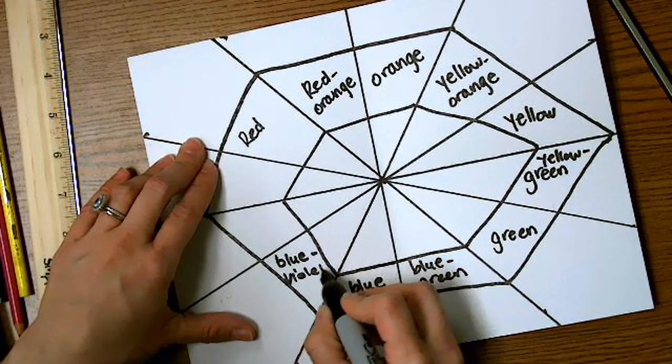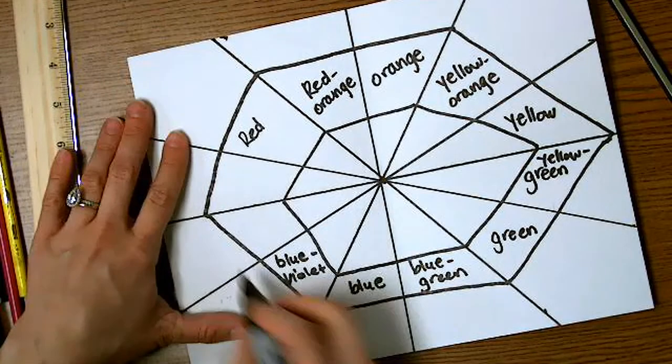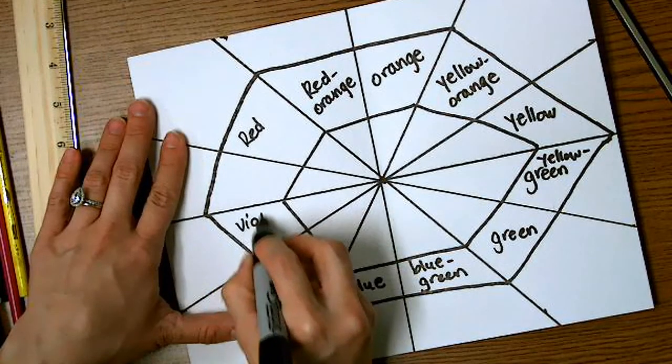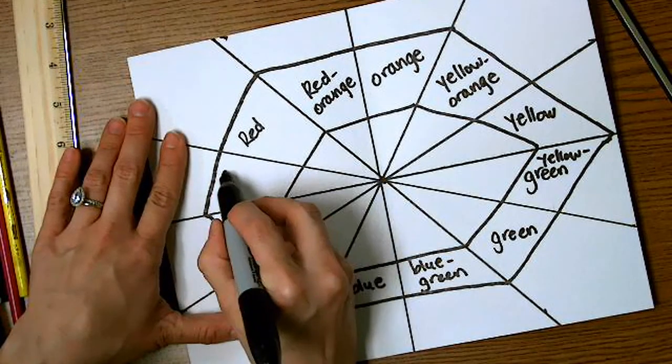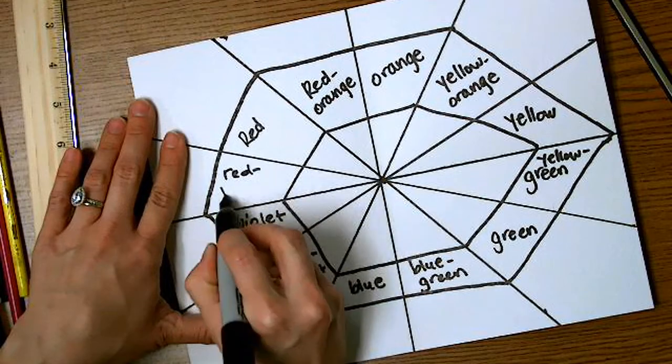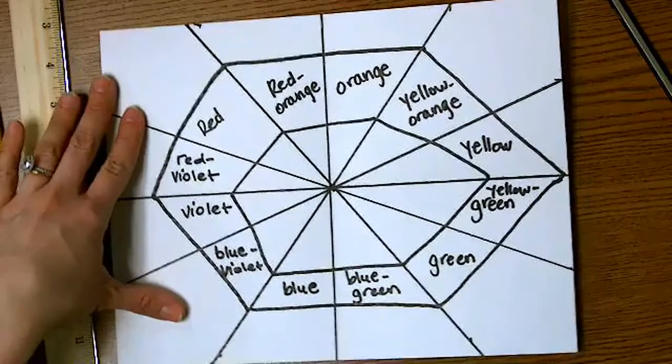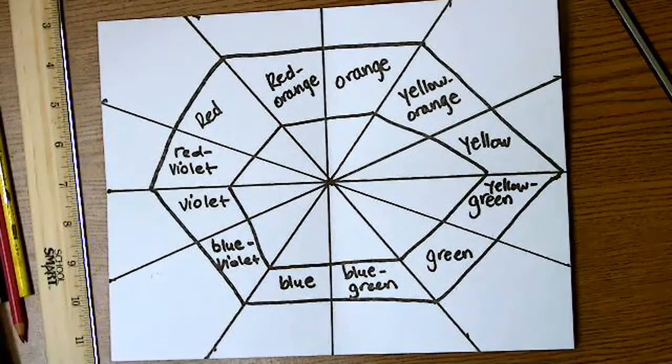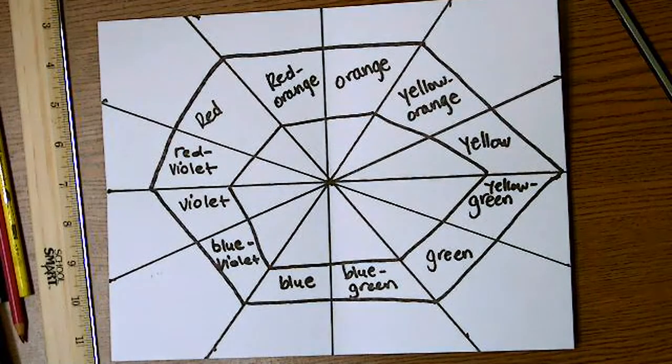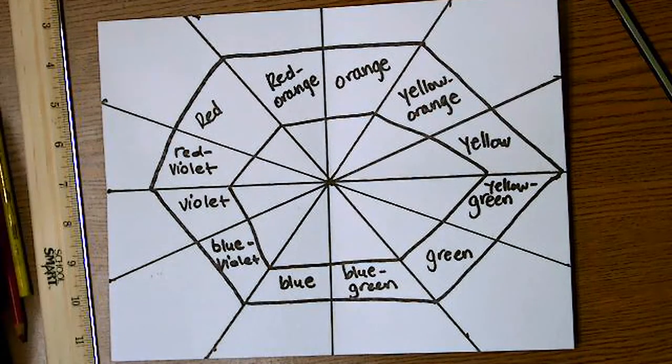And you'll notice I'm writing them in the middle. This is where the hue will be, which is the color itself. Now each individual section has a space for tint, which is the color plus white that goes in the center. Hue, which is where I'm writing—that's the color by itself. And then shade, which is the color plus black. That's on the outer ring. So it'll look like a target when we finish.